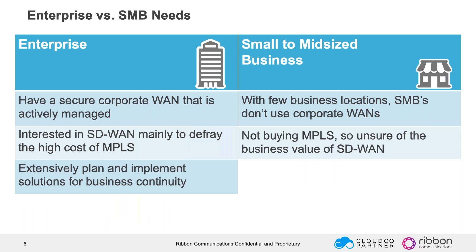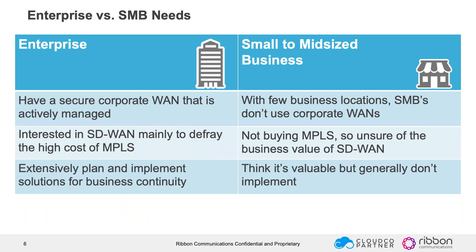Stepping through some of these needs and requirements: the enterprise has a large corporate WAN that's actively managed. For small business, it's a few locations — some are remote home offices, some are storefronts, one may be a headquarters location. They don't have a sophisticated network requirement to connect those buildings together, and they're really not in the space of having the IT facilities to do that. By the same token, they still need connectivity — assured, consistent, and reliable connectivity. They still have some of the same business needs, but it's more focused on communication and broadband functionality.